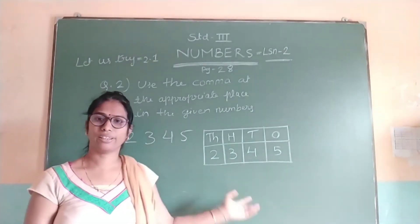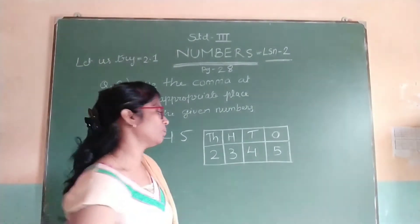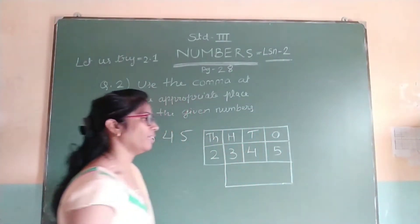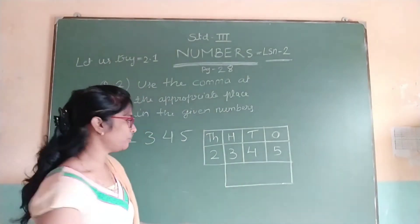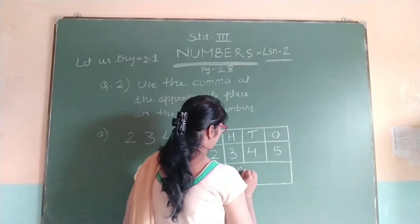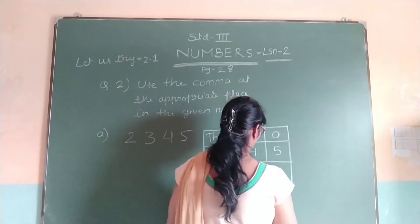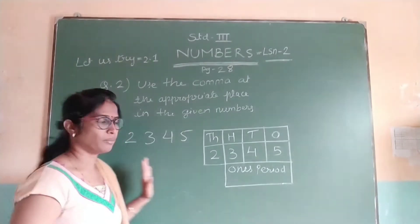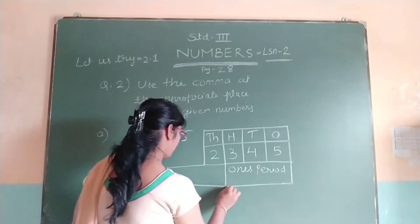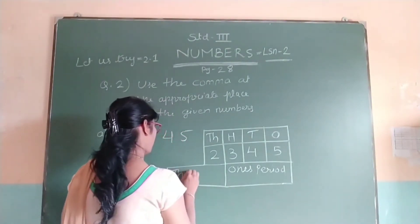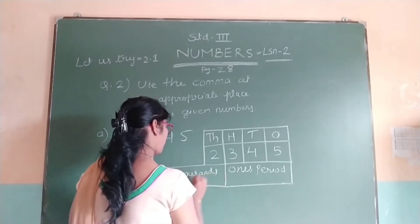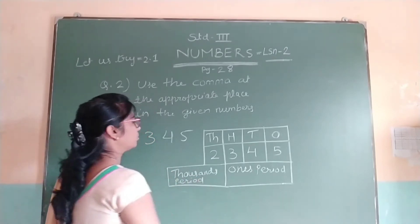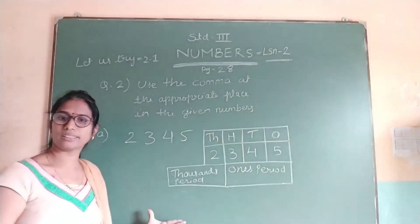A 4-digit number is divided into 2 periods. The 1s, 10s, and 100s places come in the 1s period, and the 1000s place comes in the 1000s period.